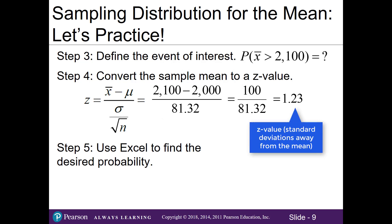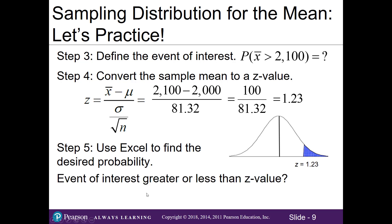In step 5, how do we use Excel to find this desired probability? I find it helpful to draw what I'm interested in. Here's our normal distribution curve. If I map out our z value of 1.23, it'll be right around here. Since I want to know greater than 2100, that's the same as saying greater than our z value of 1.23, so I shade in this tail. I ask myself, is the event of interest a greater or less than z value statement? It's greater than, which we identified in step 3. So I'm going to use 1 minus norm.s.distribution, where I plug in my z value and comma and true.